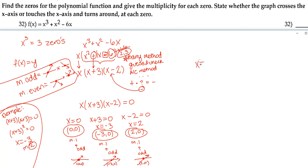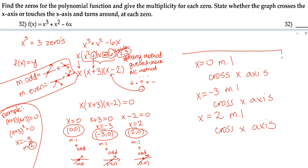So again, our x's are 0, negative 3, and 2. At 0, our multiplicity is 1, and it crosses the x-axis. At negative 3, our multiplicity is 1, and it crosses the x-axis. And at x equals 2, our multiplicity is 1, and it also crosses the x-axis.